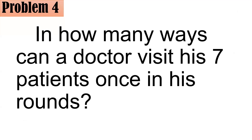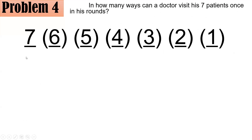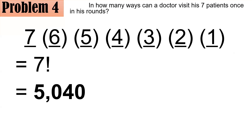Problem 4: In how many ways can a doctor visit his seven patients once in his rounds? All seven patients will be visited exactly once. In the first visit, he could visit any of the seven. Once one is visited, six remain; then five, four, three, two, and one. This is the product of all whole numbers from 7 down to 1, which is 7 factorial, or 5,040.